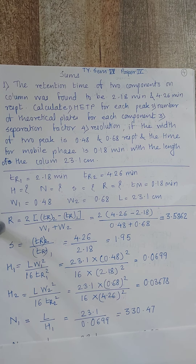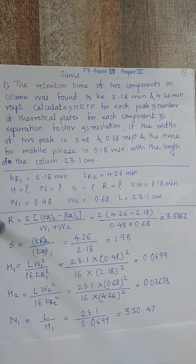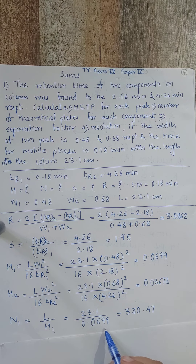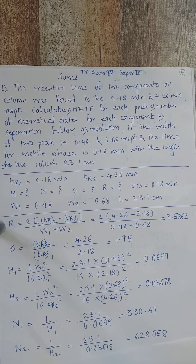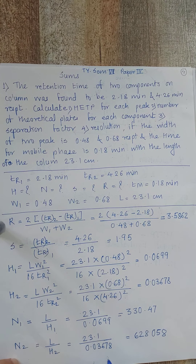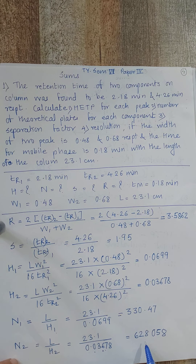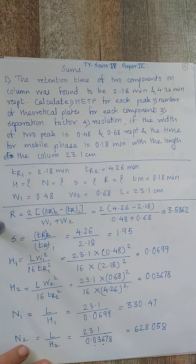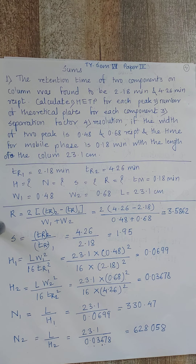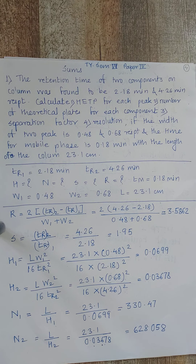Now find N1 and N2, the number of theoretical plates. N1 = L / H1 = 23.1 / 0.0699 = 330.47. N2 = L / H2 = 23.1 / 0.03678 = 628.058. Always remember: find H1, H2, their average, then N1, N2, and their average.